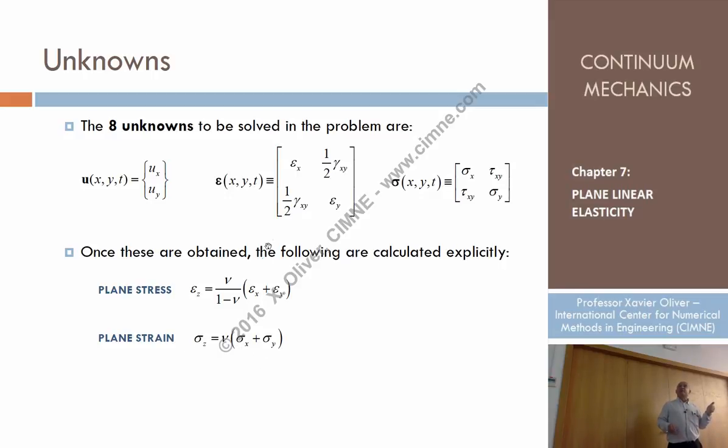which can be obtained just by summing these two, sigma X and sigma Y, and multiplying by the Poisson ratio.